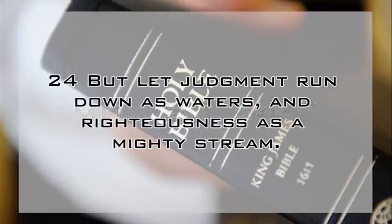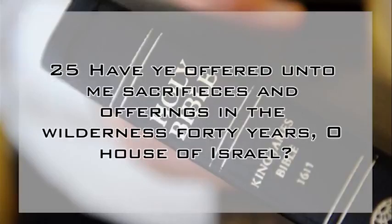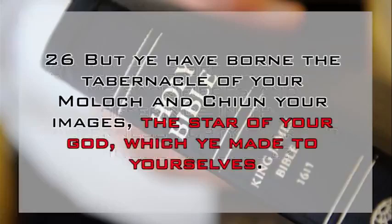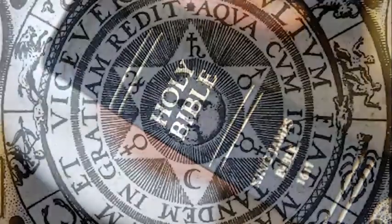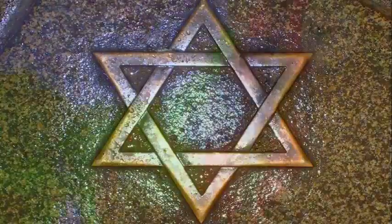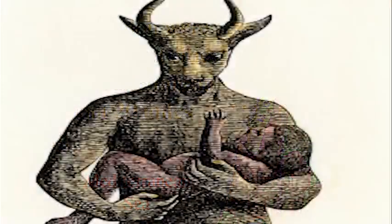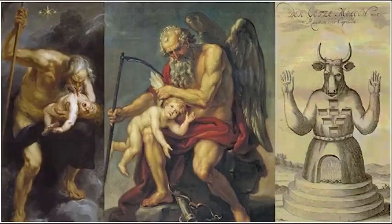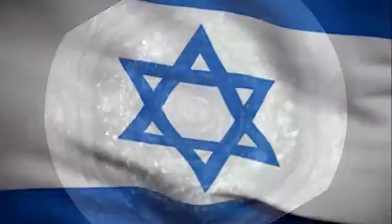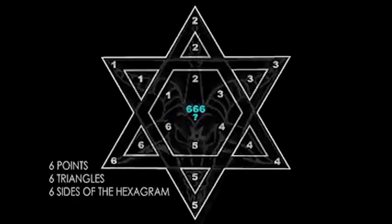"But let judgment run down as waters, and righteousness as a mighty stream. Have ye offered unto me sacrifices and offerings in the wilderness forty years, O house of Israel? But ye have borne the tabernacle of your Moloch, and Chian your images, the star of your God, which ye made to yourselves." You can't get any clearer than that. God is talking about the star that Solomon was using and praying before and conjuring up demons with. When Solomon had the temple built, he used people from a town called Tyre. Tyre worshipped a god called Baal. Baal is another name for Saturn in some occult groups. This hexagram is a symbol of Baal, or Saturn — not the Star of David. This is the Seal of Solomon, from the Jewish Kabbalah.